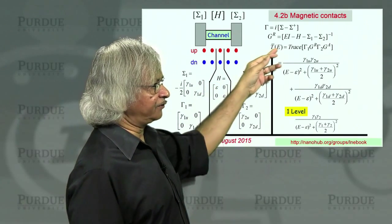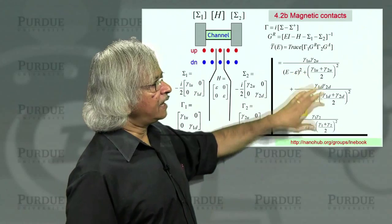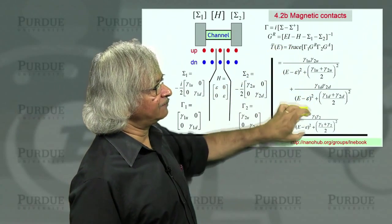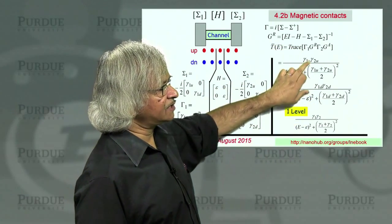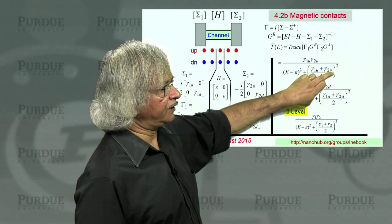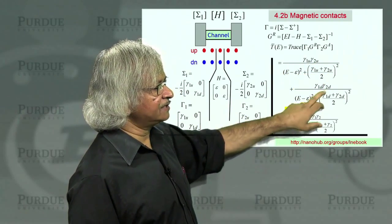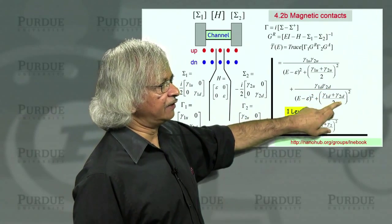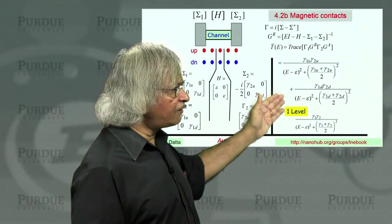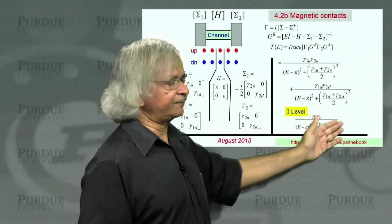And so if you actually put in these matrices, multiply it out, take the trace, what you'll get will look just like our old result, except that there will be two terms. You see one from the 1-1 element and one from the 2-2 element. And when you take the trace, you'll be adding them. And for the 1-1 element, you'll have something that looks just like this, except for that subscript of u everywhere. And for the 2-2 element, you'll have again something looking like this, except for the subscript of d everywhere.